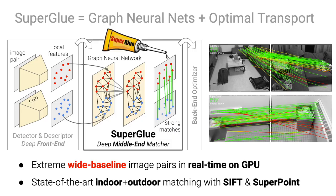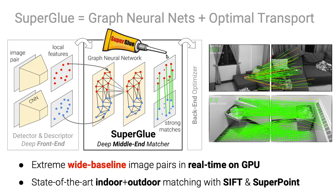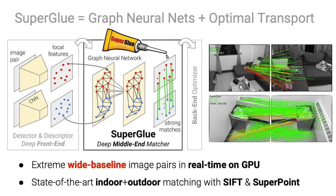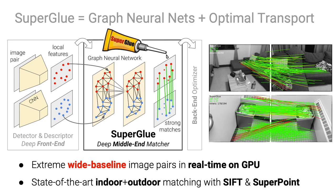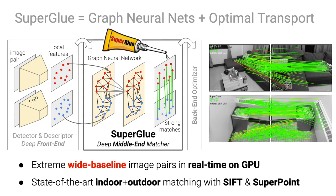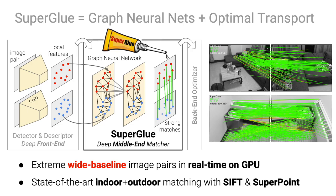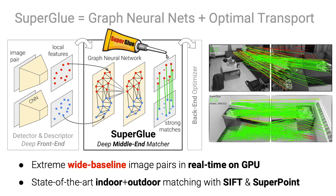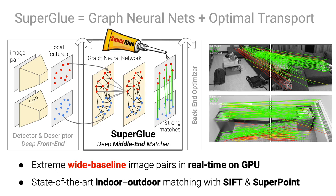SuperGlue is a deep neural network that performs feature matching. It combines the best of two worlds: deep learning with graph neural networks and classical optimization with optimal transport. SuperGlue is a middle-end that estimates matches between local features in two images while rejecting unmatched points. As you can see here, it can successfully match image pairs with extreme baseline in real time. This results in state-of-the-art pose estimation with both classical and learned features.